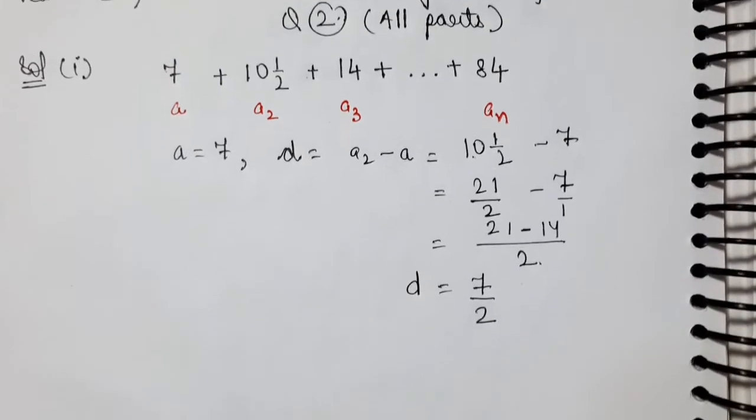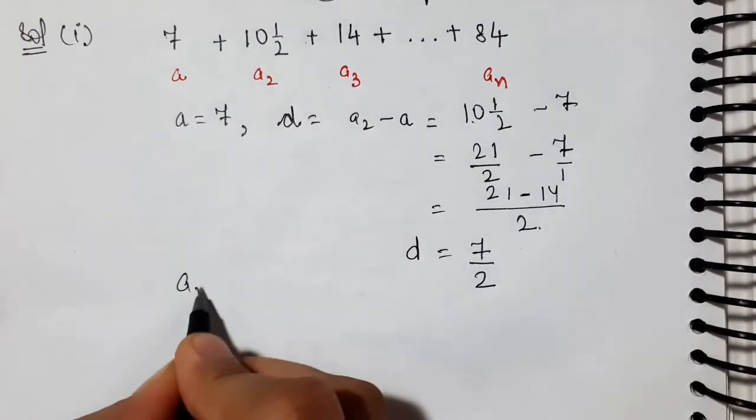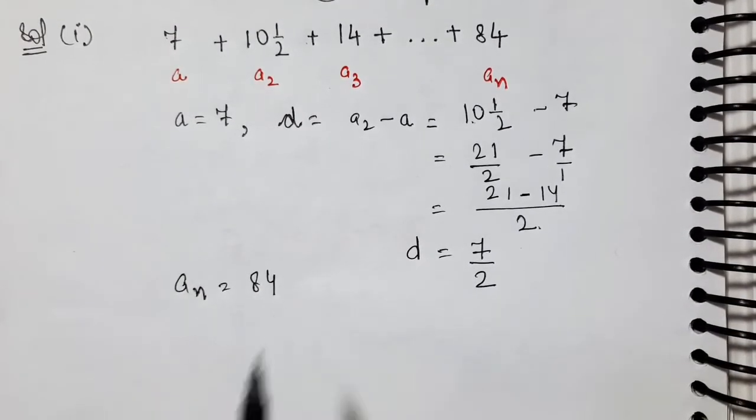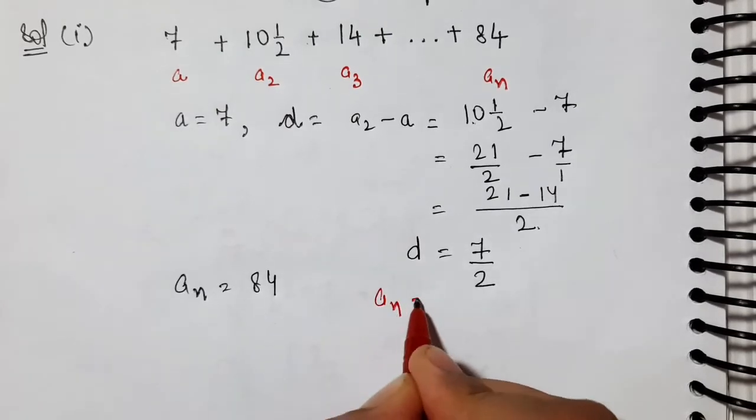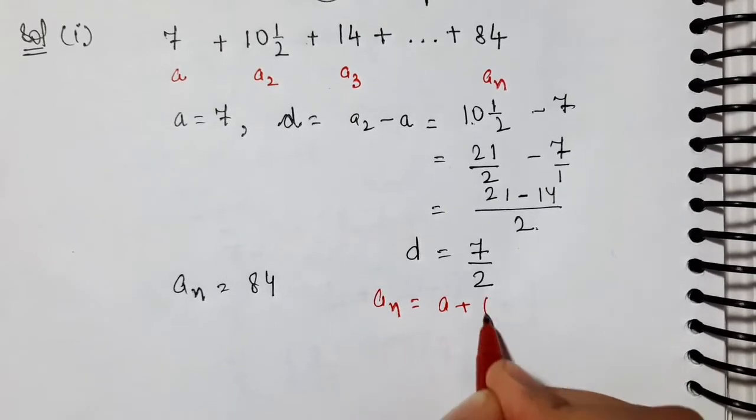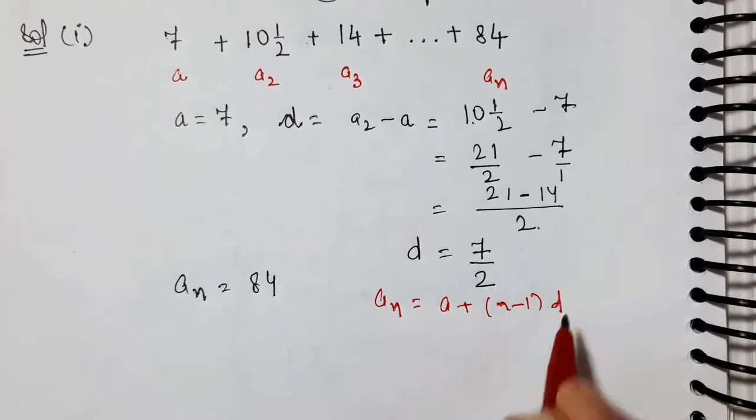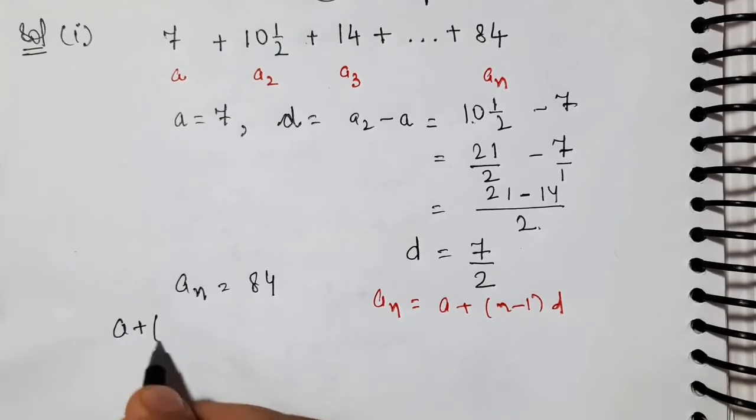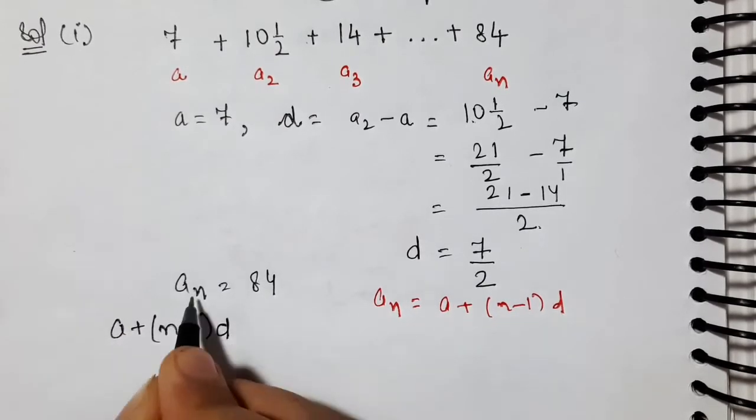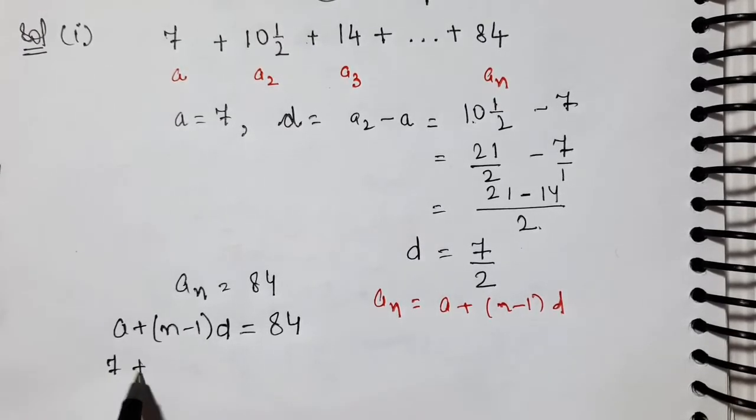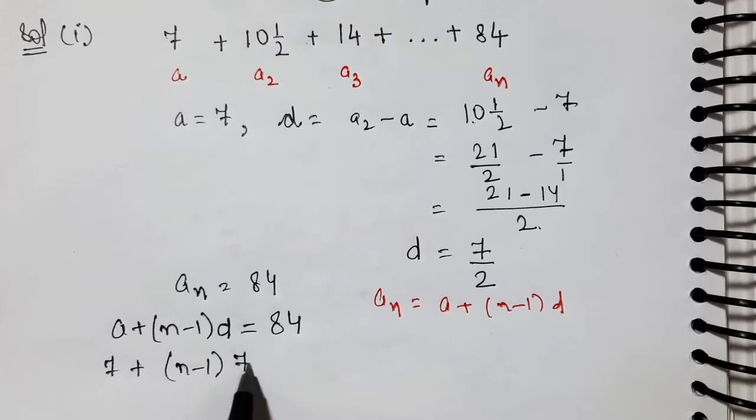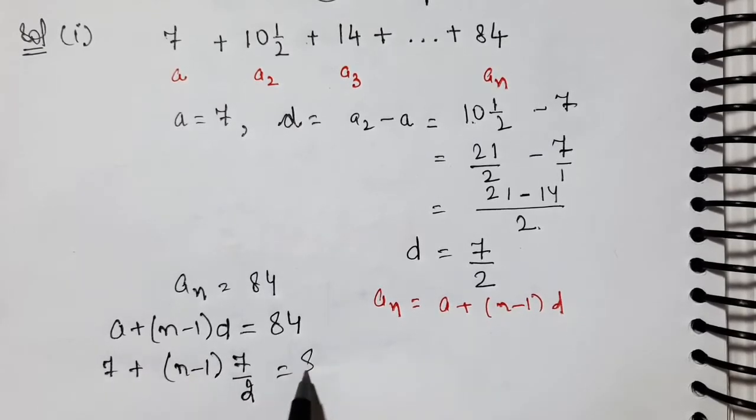We'll solve this. This is a fraction, so we'll take LCM and solve. LCM of 2 and 1? 2. 7 has nothing below it, meaning there's 1 below it. So LCM of 2 and 1 is 2. In the table of 2, 2 times 1 is 2, 1 into 21 is 21, minus table of 1 gives 2, 2 into 7 is 14.